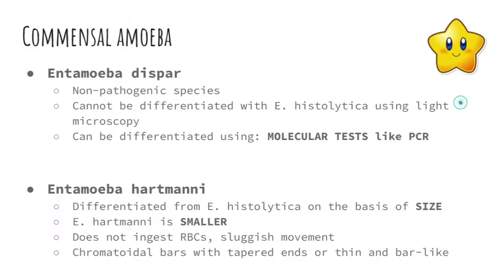Apart from E. coli, there are other commensal amoebas. We have Entamoeba dyspar, a non-pathogenic species that resembles E. histolytica but cannot be differentiated from it using the light microscope alone — morphology is identical. Differentiation requires molecular testing such as PCR. When reporting E. histolytica in the lab, you must report it as 'E. histolytica/dyspar' because their appearances are the same.